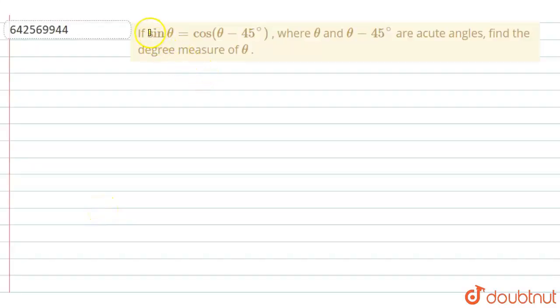The question says that if sin theta is equal to cos theta minus 45 degree where theta and theta minus 45 degree are acute angles, find the degree measure of theta.